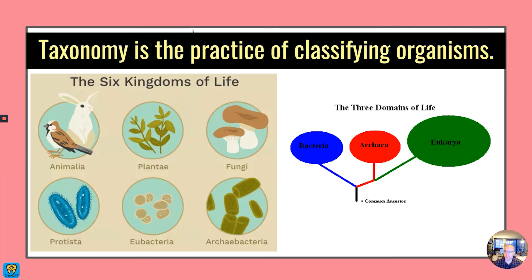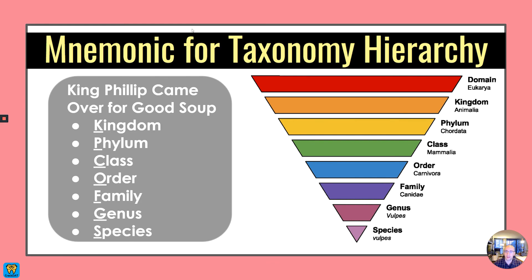So first let's talk about taxonomy. Taxonomy is the practice of classifying organisms. Here we have the six kingdoms of life and the three domains of life, and this is a way in which we organize life to help us make better sense of the world and to help us predict what attributes certain organisms are going to have based upon how we categorize them. Here's our mnemonic for taxonomy.